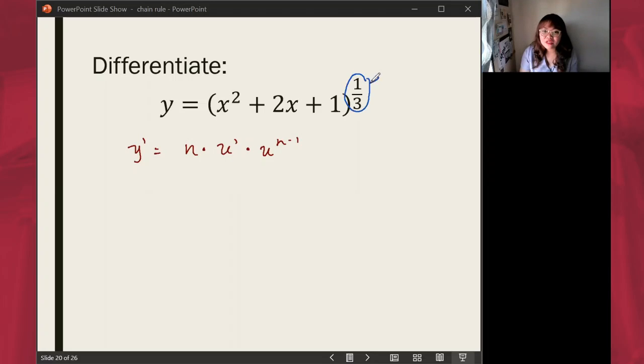One-third is our exponent which will be our value for n. The expression inside the parenthesis will become u. If our u is x squared plus 2x plus 1, then let's identify u' by getting the derivatives. x squared, if you get the derivative of that,